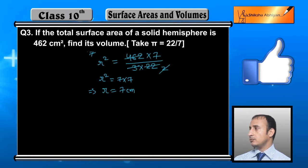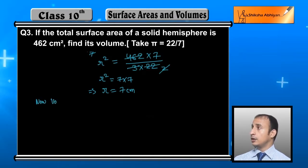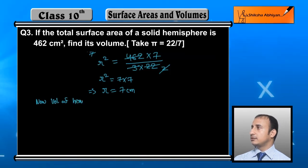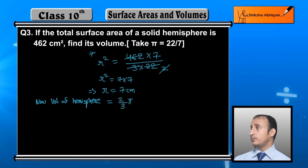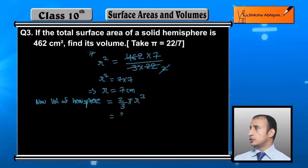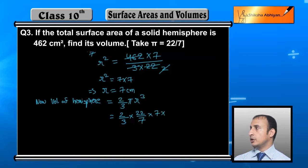So the radius of the hemisphere is 7 centimeter. Now we need to find the volume of the hemisphere, which is what was required. The volume of hemisphere = (2/3)πr³. Substituting values: (2/3) × (22/7) × 7³.